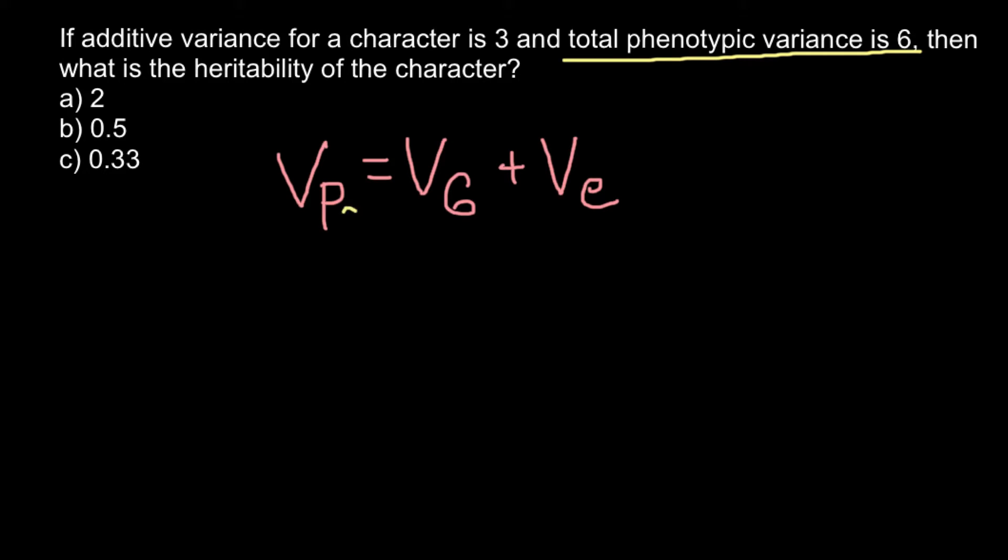According to our problem, total phenotypic variance equals 6 and additive variance of the character is 3. Additive variance is genetic variance, so it's very easy to solve for the environmental variance—it also should be 3.